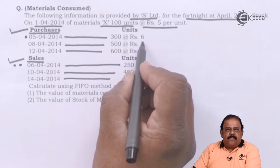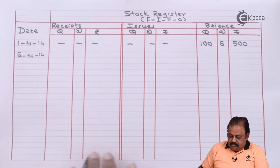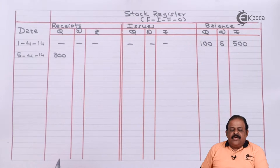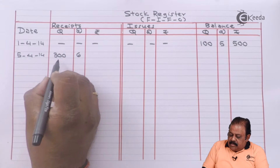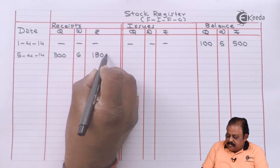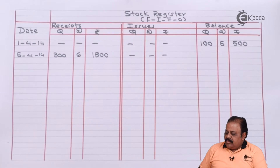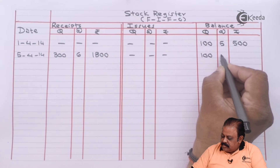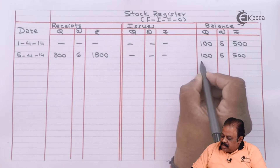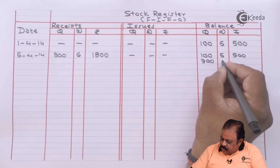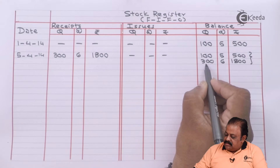On 5th April there is a purchase of 300 units at the rate of Rs.6. 300 units entered in the quantity column, rate 6, amount is 300 multiplied by 6 = Rs.1800. Now recording the closing balance: we have opening balance 100 units at Rs.5 (amount Rs.500) and fresh purchase 300 units at Rs.6 (amount Rs.1800). So we now have two stocks: 100 units and 300 units.